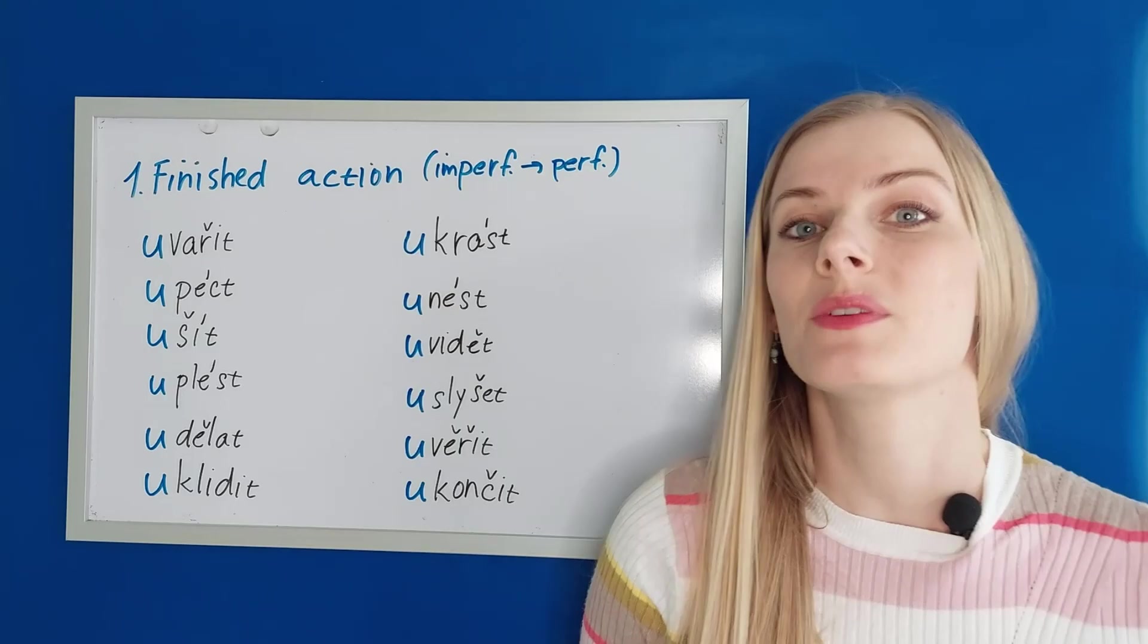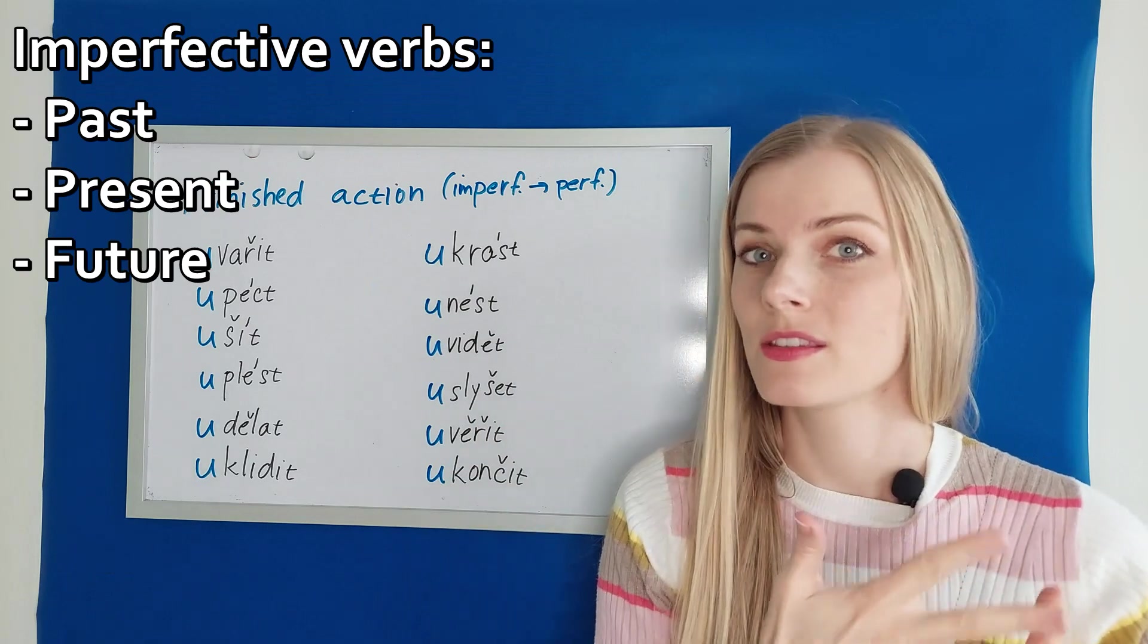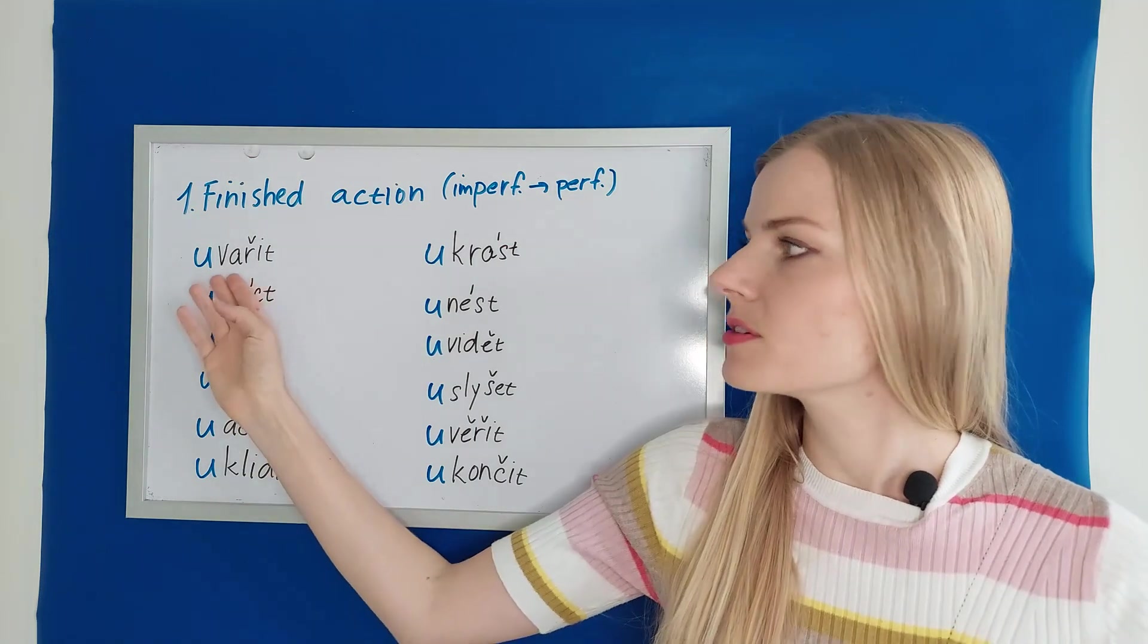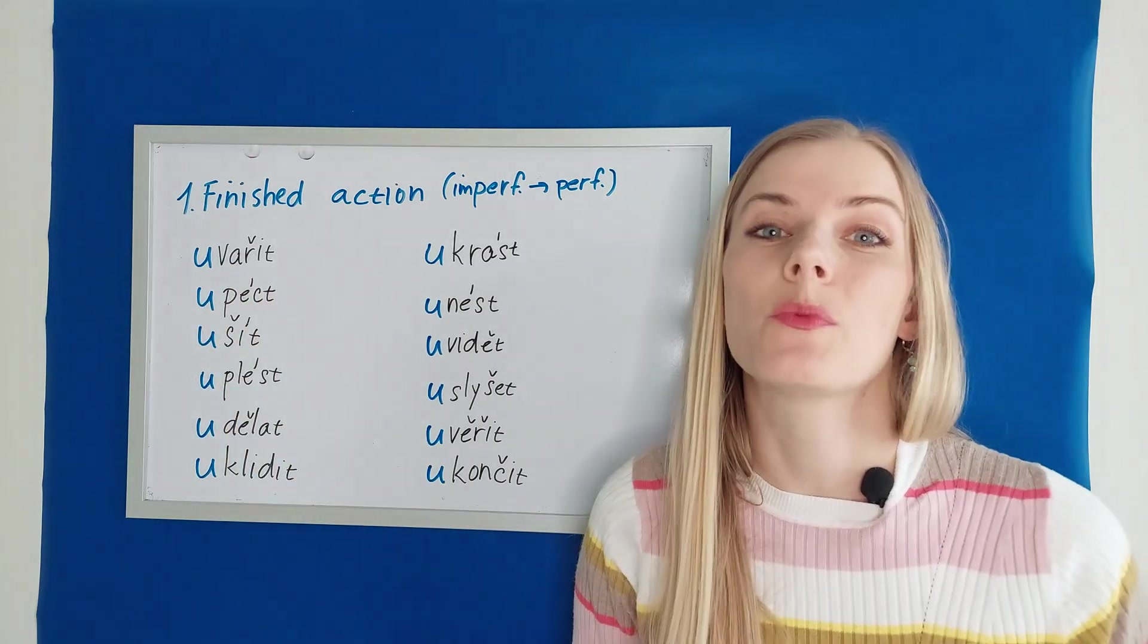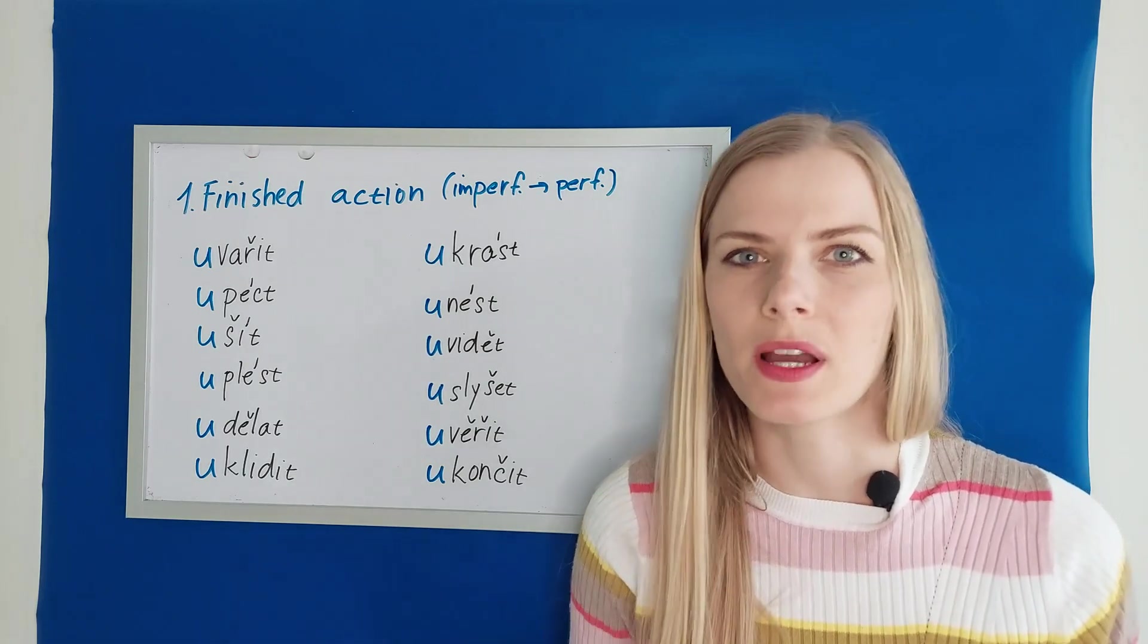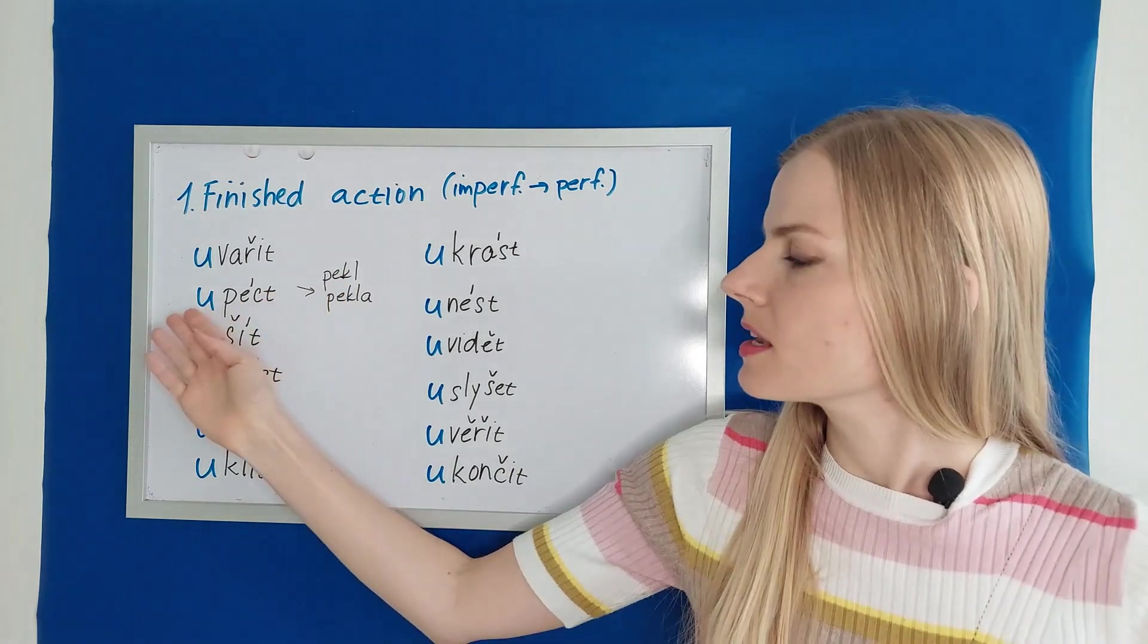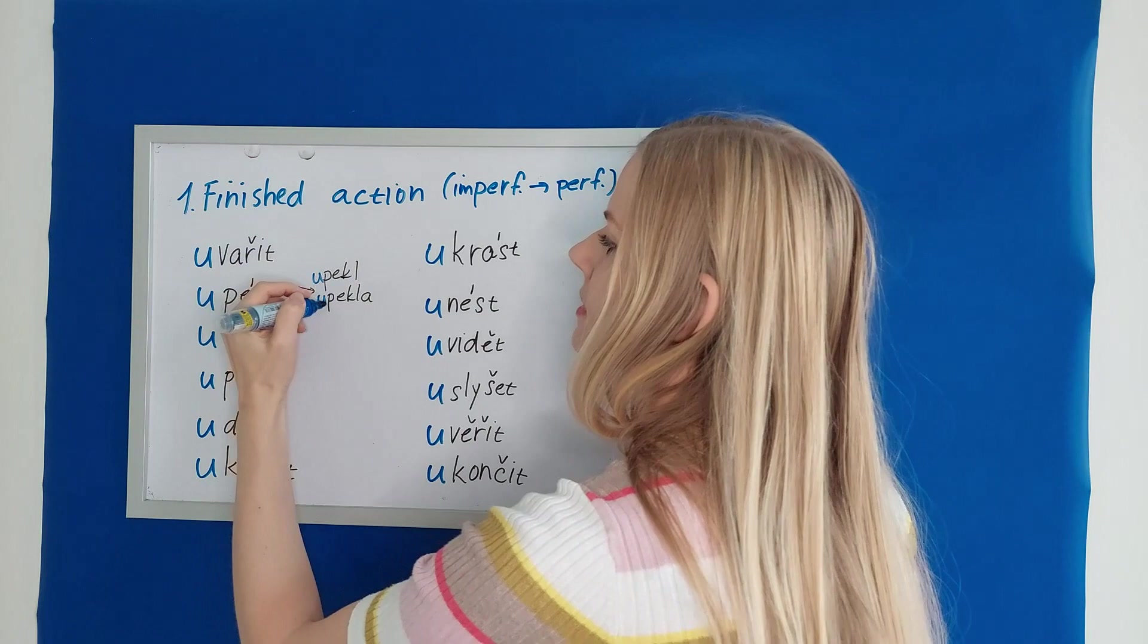I would like to remind you that when we have imperfective verbs, they can express past tense, present tense and future tense. However, when we have perfective verbs such as these ones, we can only express future tense and past tense. Let's have a look. Then we have péct, upéct to bake. In the dialogue I said upekla jsem banánový chlebíček. Péct is irregular in past tense. Pekl jsem, pekla jsem, pekli jsme. The same would be with the perfective form. Upekl jsem, upekla jsem, upekli jsme.